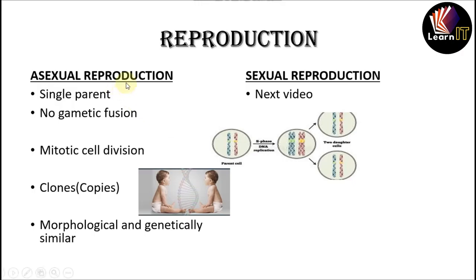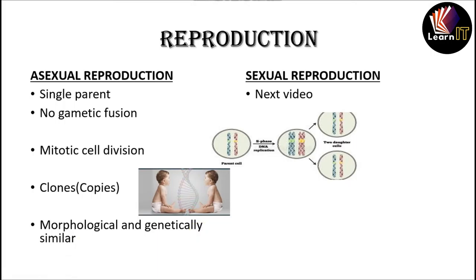Various factors affect the reproduction rate. On that basis, reproduction has been divided into two parts: one is asexual and the second one is sexual. For this topic we will be taking only the asexual mode of reproduction, and we will cover sexual mode in our next video. Asexual reproduction means when the offspring is produced by a single parent without the involvement of gametic fusion. It only involves mitotic cell divisions.